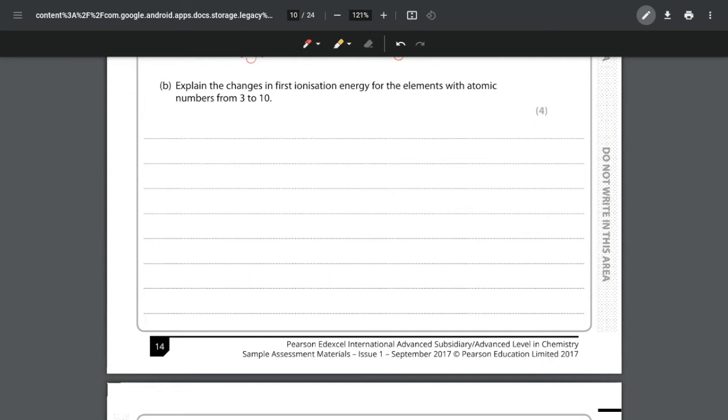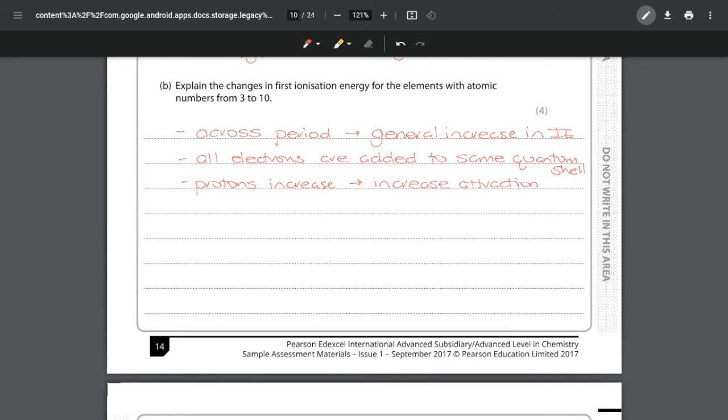First of all we're going to see what the overall trend is. Across the period we get a general increase in ionization energy. That is because all of your electrons are added to the same quantum shell, the second quantum shell. So there is no difference in where the electrons are being added. However your protons are increasing across the group. So that leads to an increased attraction. Your electrons are being pulled closer to your nucleus as you move from lithium to neon because you're getting that increase in your protons. That would get us the first two marks.